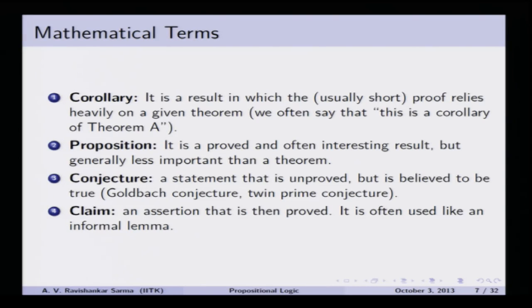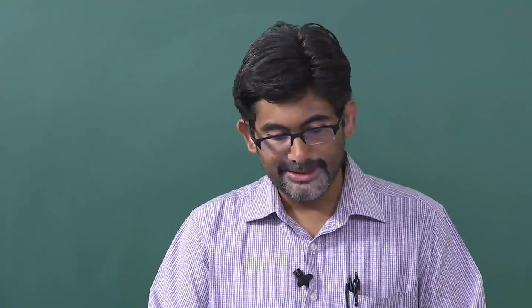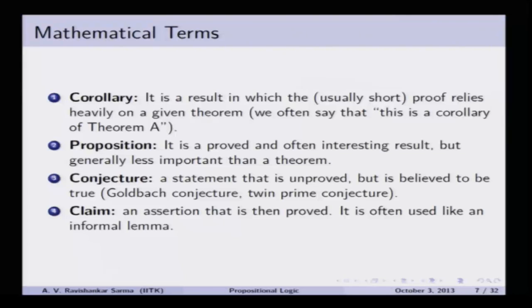All conjectures can be refuted or proved. Until we find a rigorous proof for a conjecture, we will not accept it as a theorem. All conjectures are potentially capable of becoming theorems once they find a rigorous proof. The last term is 'claim' — an assertion in any mathematical paper that is eventually going to be proved. It is slightly different from conjecture; a conjecture is one where gut feeling tells us it is obviously true. A claim is often used like an informal lemma.